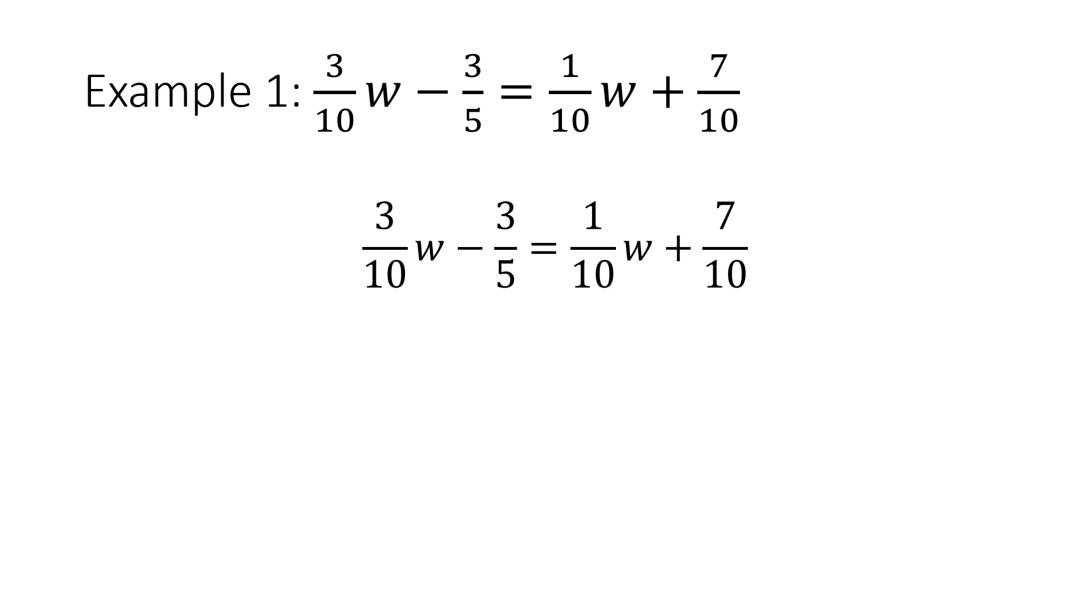In order to do that, we need to determine the least common multiple between the numbers in the denominator. We have 10 and 5 in the denominator, so the LCM between 10 and 5 is 10.